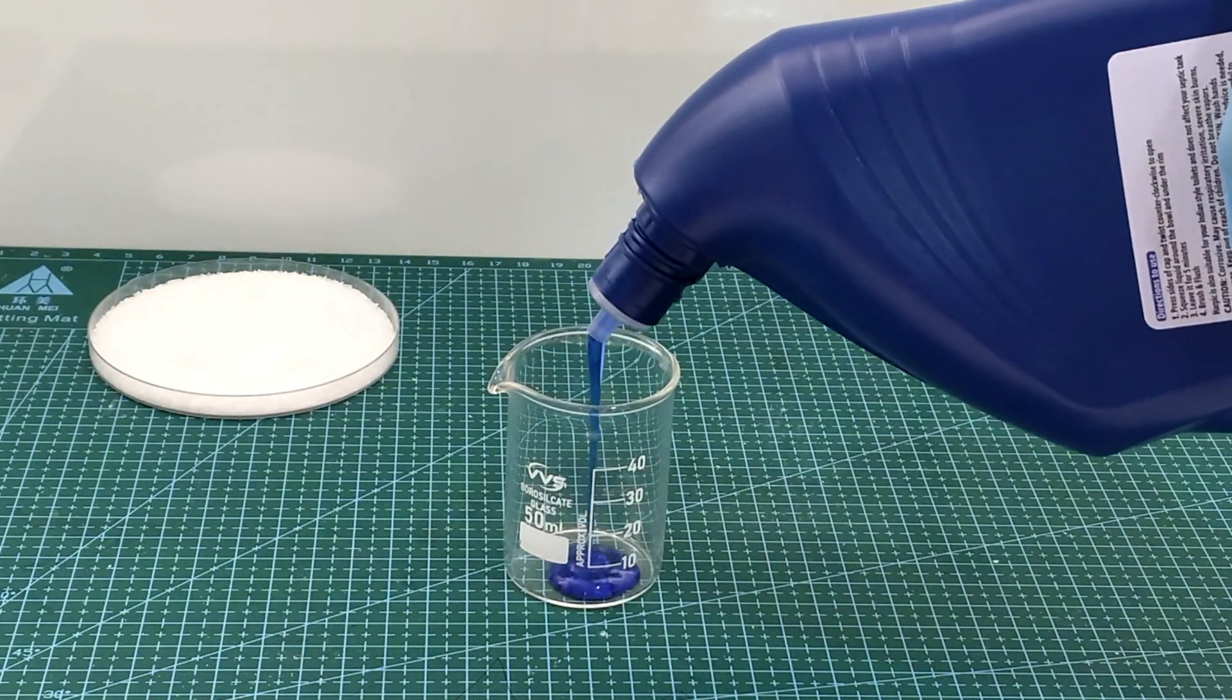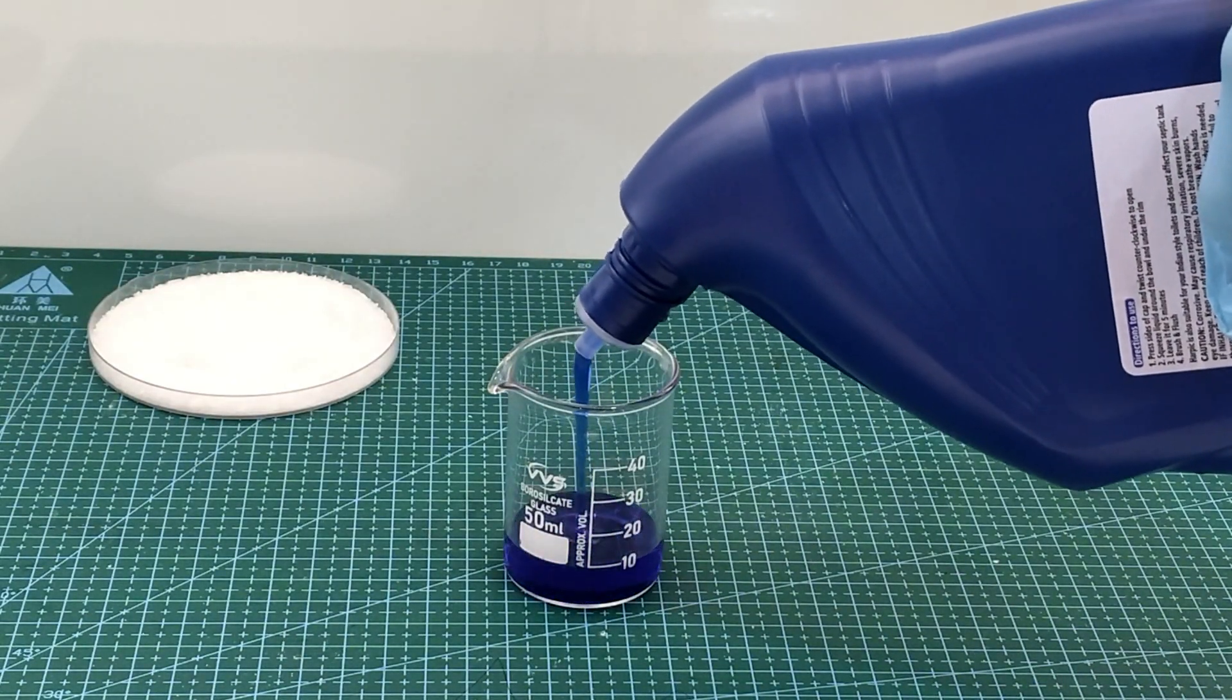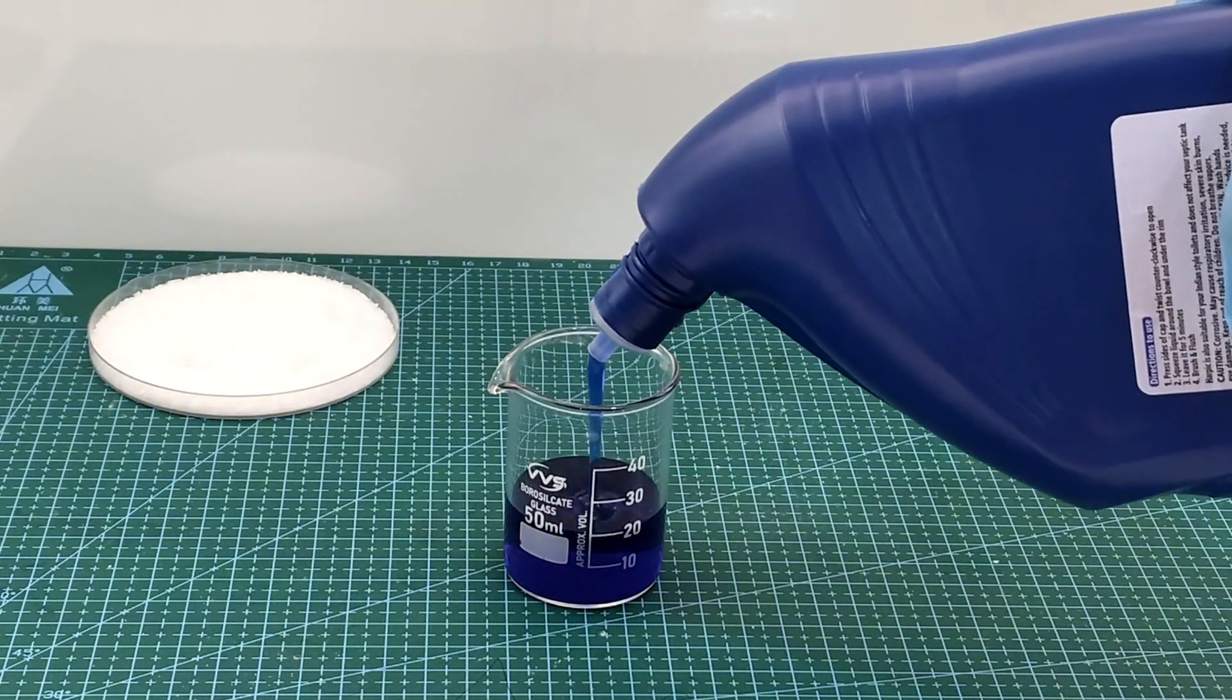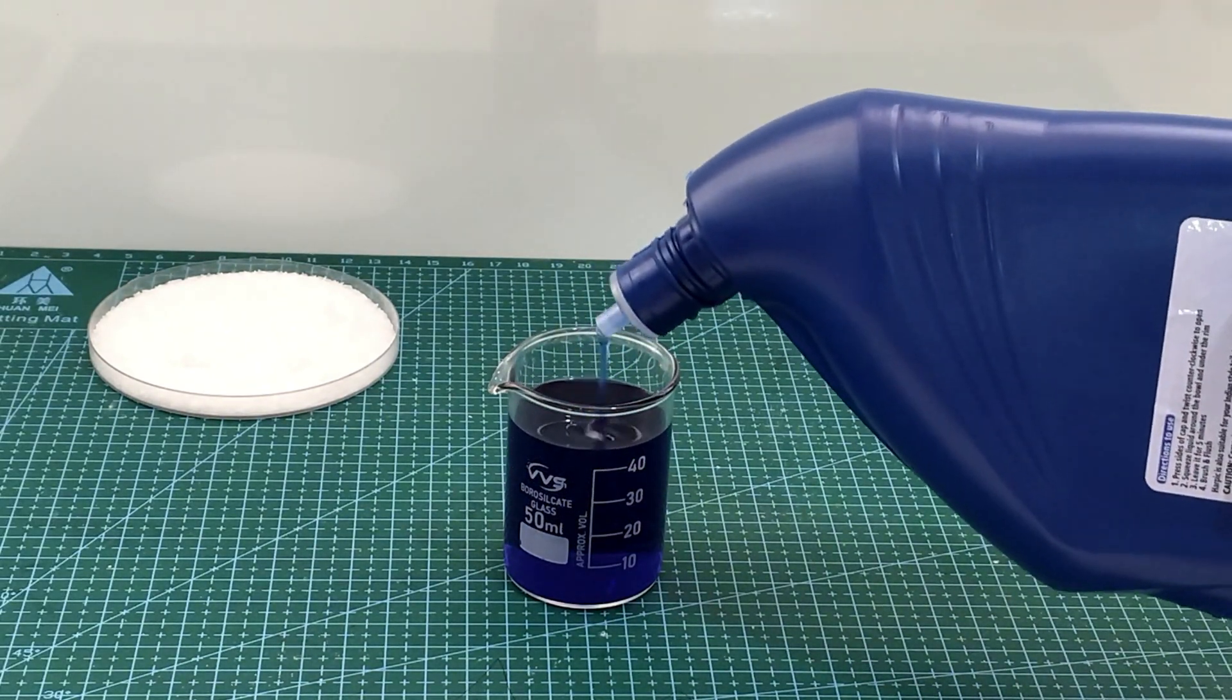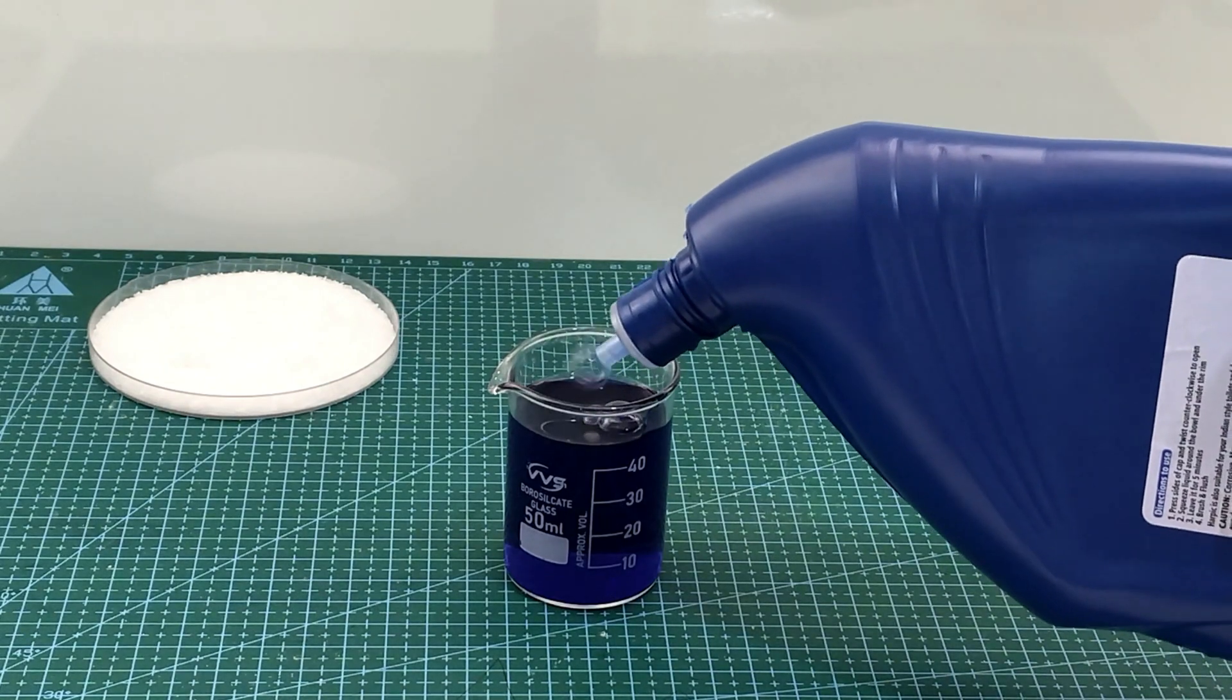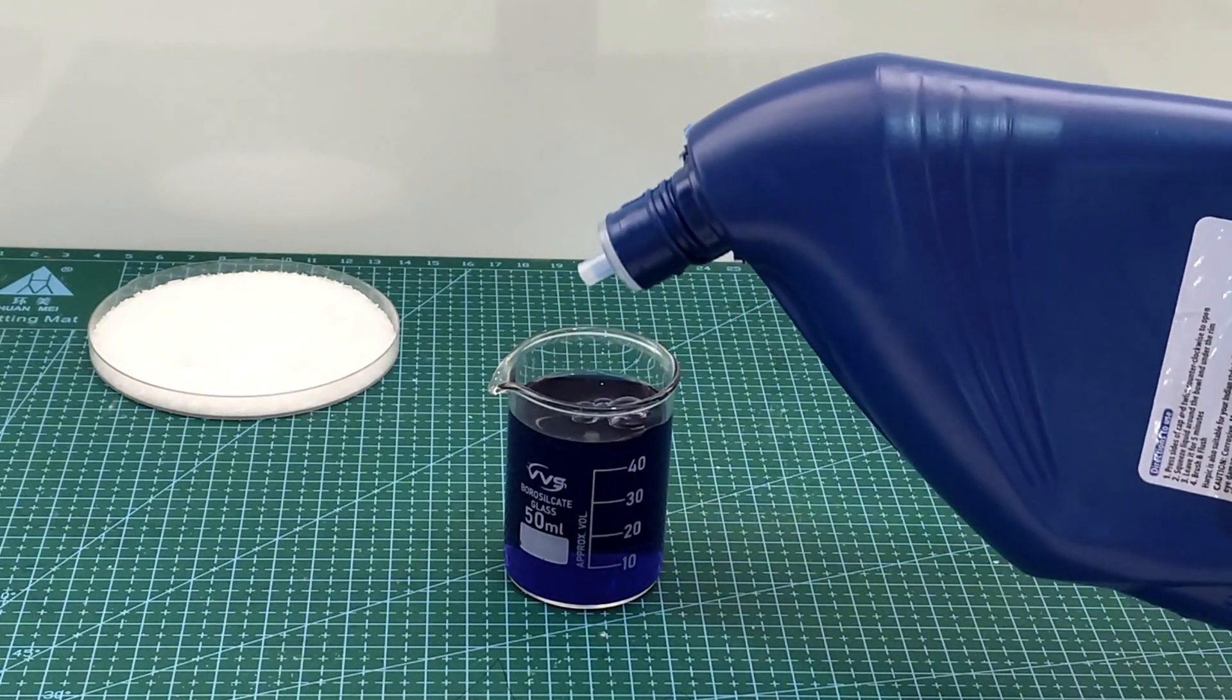Then, I pour out 45 ml of Harvick. Harvick is a limescale remover. Therefore, it contains 10% hydrochloric acid which reacts with the limescale calcium carbonate to form a water-soluble calcium chloride.